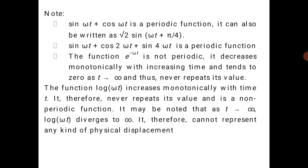Similarly, sin(ωt) + cos(2ωt) + sin(4ωt) is a periodic function. The function e^(-ωt) is not a periodic function because it decreases monotonically with increasing time and tends to zero as t tends to infinity. You have to remember: repetition and repeat - repetitions are not periodic motion.